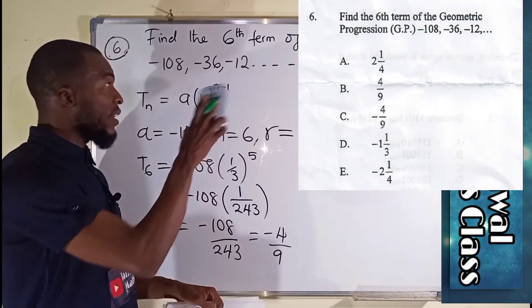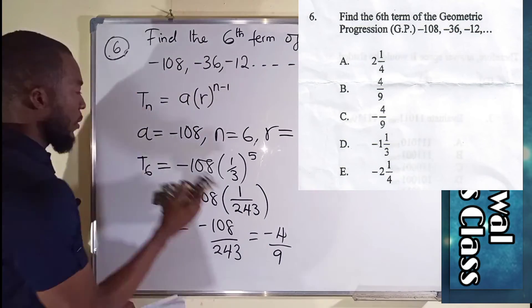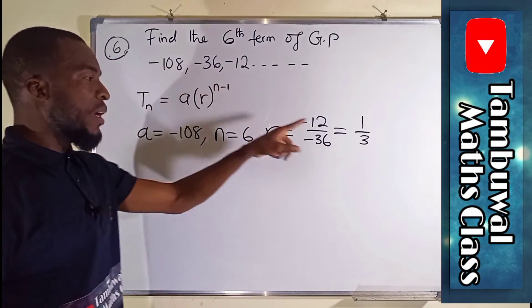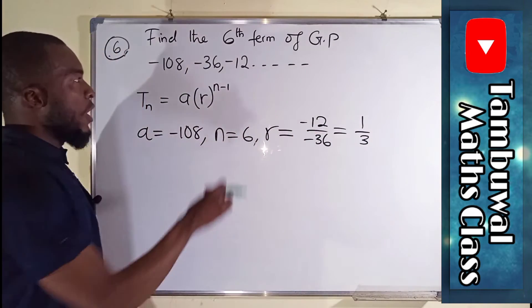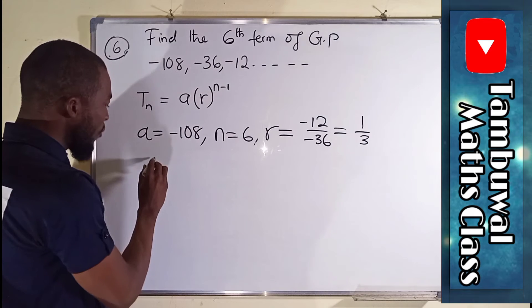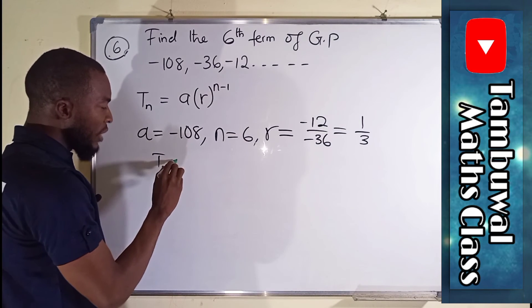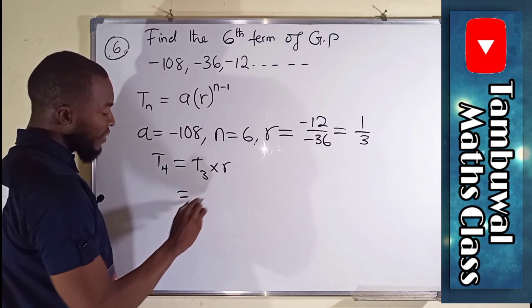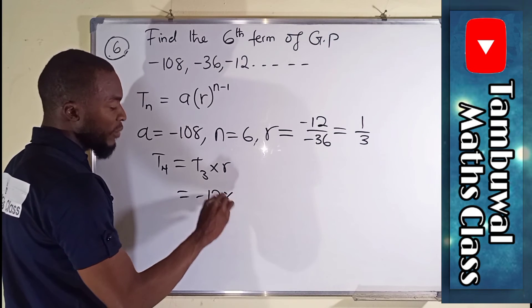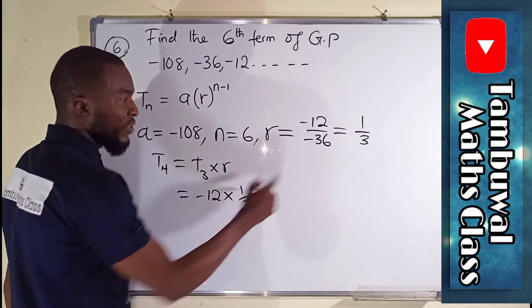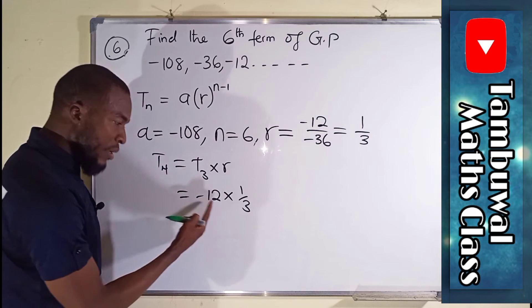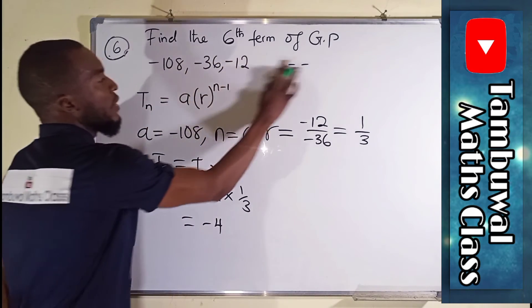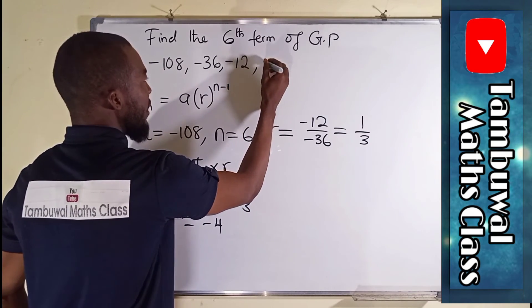But let me show you the shortcut to answer this since you are dealing with objective questions. Remember, I told you every term multiplied by the common ratio will give you the subsequent term. This is term number 3. To obtain term number 4, which is T4, it is the same thing as saying T3 multiplied by R. And this is equal to T3 is negative 12 multiplied by 1 over 3, which is R. And this is equal to, 3 can go into 12 four times, so we have negative 4. So it means term number 4 is going to be negative 4.